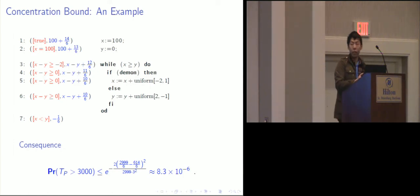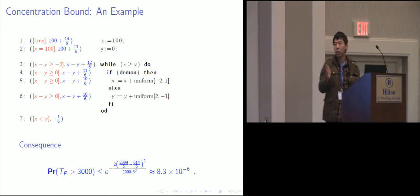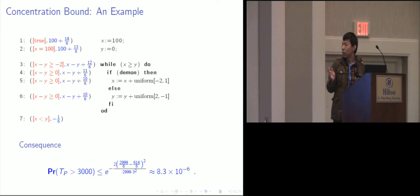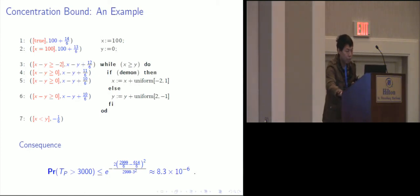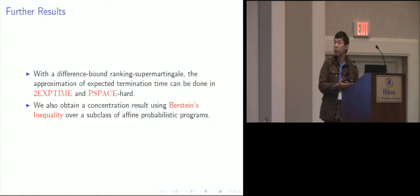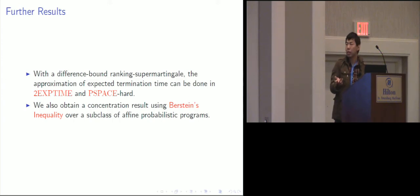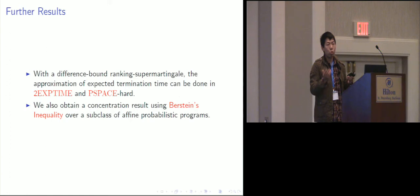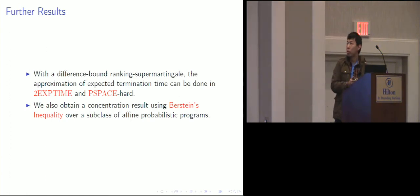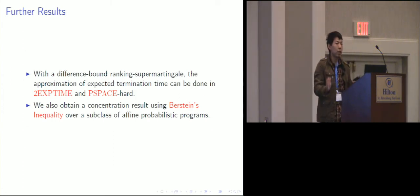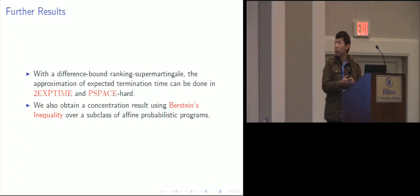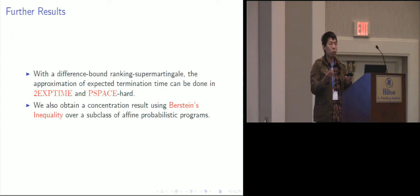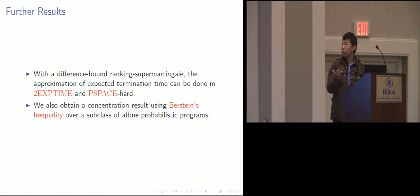Continuing with our running example: by applying our theorem, we show that the probability that this program does not terminate within 3,000 steps is no more than 8.3 times 10^{-6}. As for the use of this concentration bound, we show that with it, we can approximate the expected termination time of a program in exponential time. We also show that such an approximation is PSPACE-hard. Moreover, we obtain another approach to derive a concentration bound through the Bernstein-type inequality.